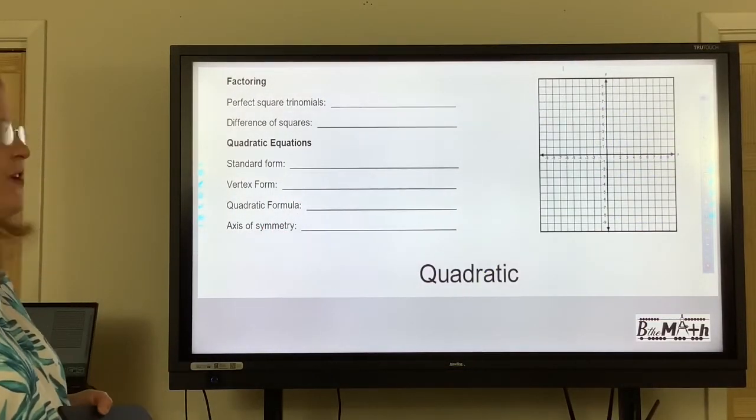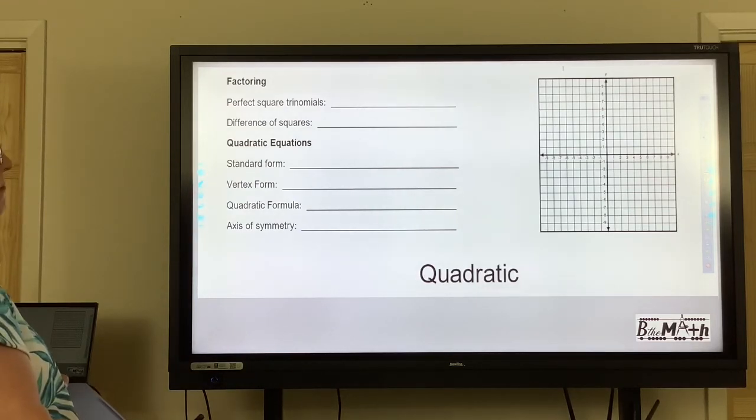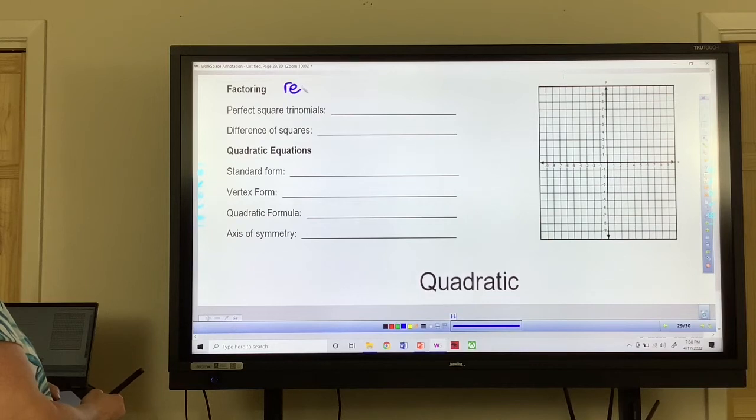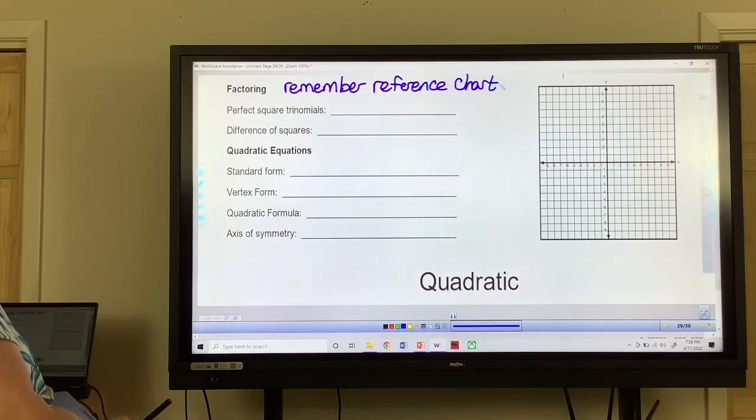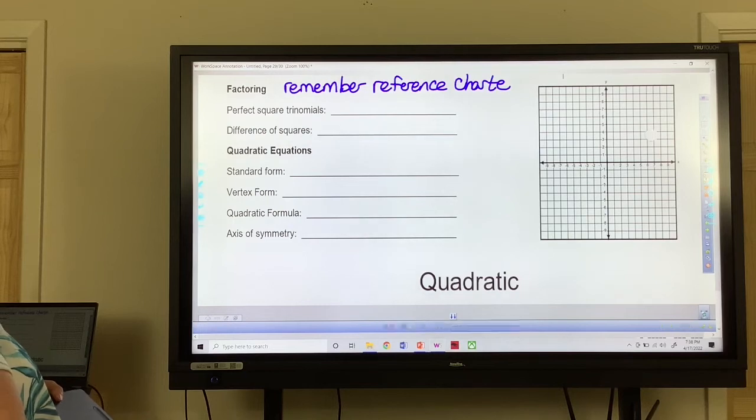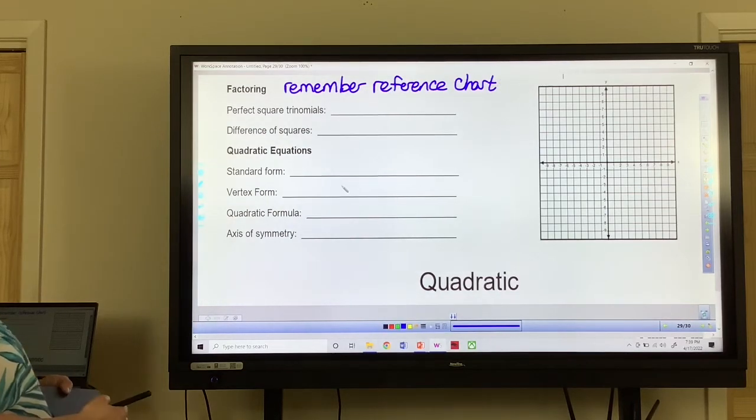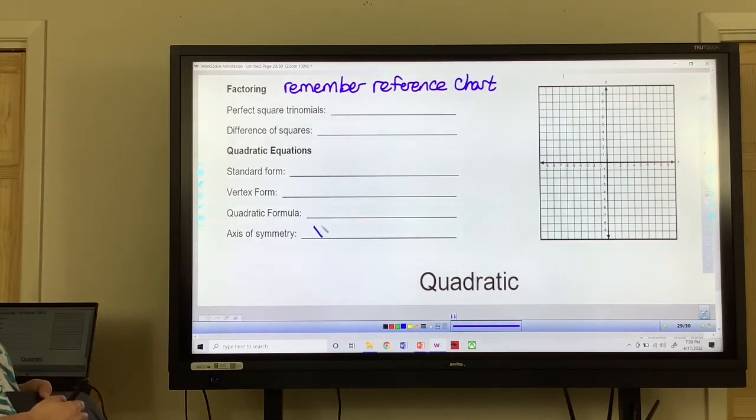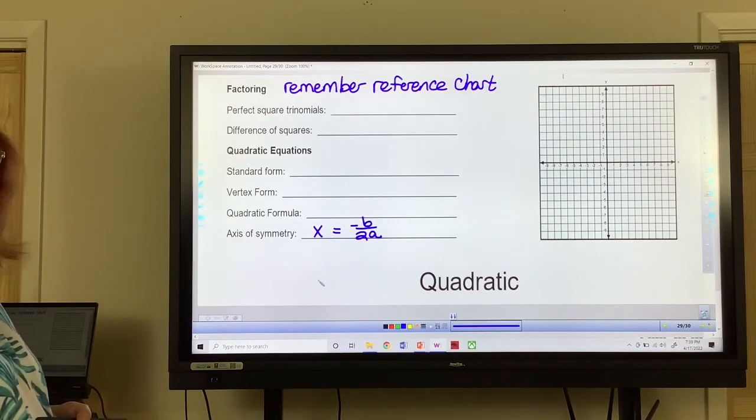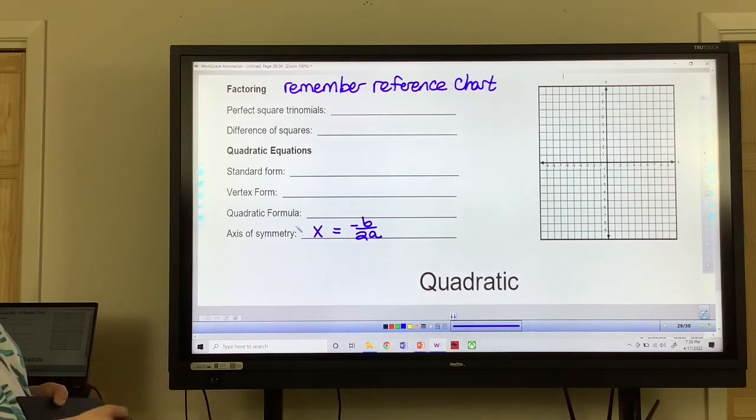Remember, most of these things here are on your reference chart. So remember your reference chart. I'm going to let you fill those in. The only one I'm going to put on there is axis of symmetry because that's X equals negative B over 2A. Negative B over 2A. And you use that from the standard form for your A, B, and C. But I want to make sure you go to the reference chart and you look at those things.